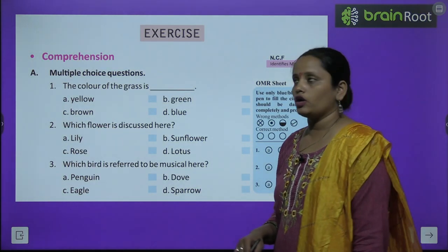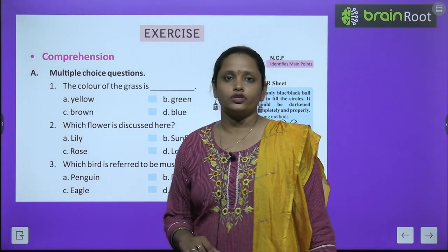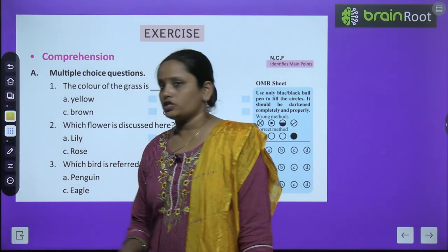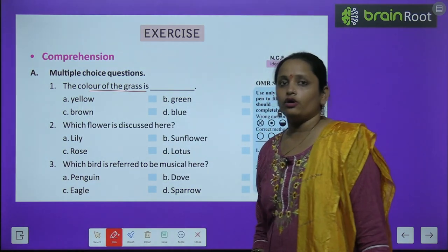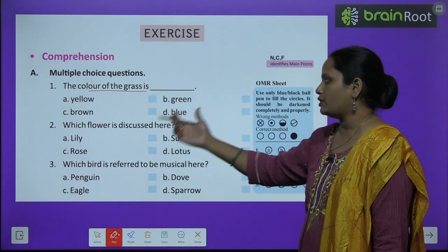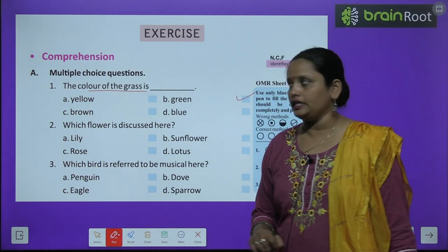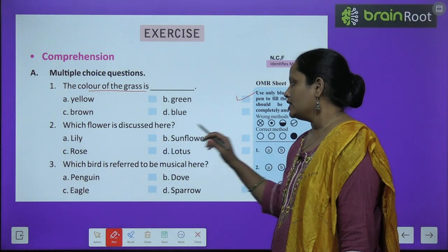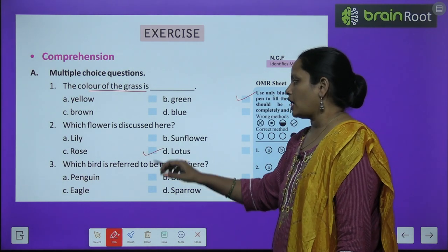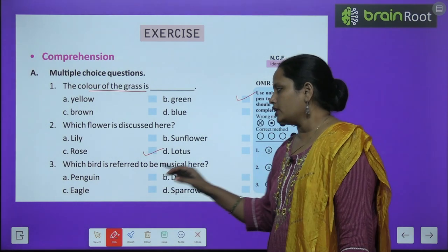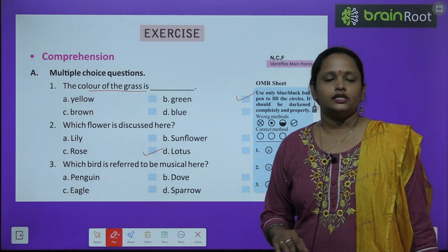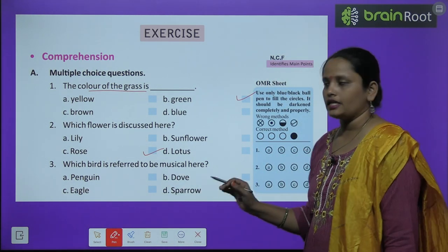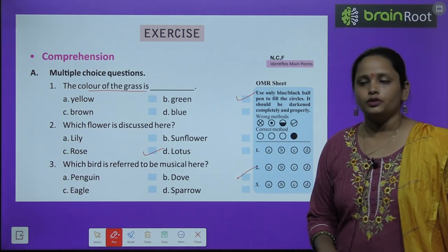Now let's move on to the book exercise — comprehension. First are multiple choice questions. The colour of the grass is: yellow, green, brown, or blue? The answer is green. Which flower is discussed in the poem? Lily, sunflower, rose, or lotus? The answer is rose. Which bird is referred to as musical? Pigeon, dove, eagle, or sparrow? The answer is dove.